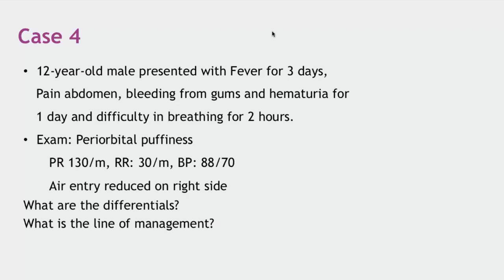Do we differentiate shock types at the beginning or simply presume distributive shock and start fluid resuscitation? In most cases — hypovolemic and septic shock — the main goal is to give adequate fluid. Only in cardiogenic shock is it different, but dengue patients will always have a hypovolemic/distributive component. Start with fluid management; if the patient is not showing expected improvement, then look for other causes like severe pericardial effusion. Initial fluid management will lead to some improvement.